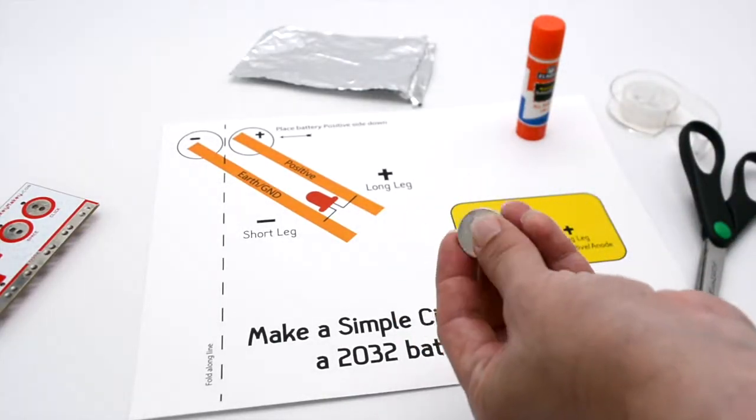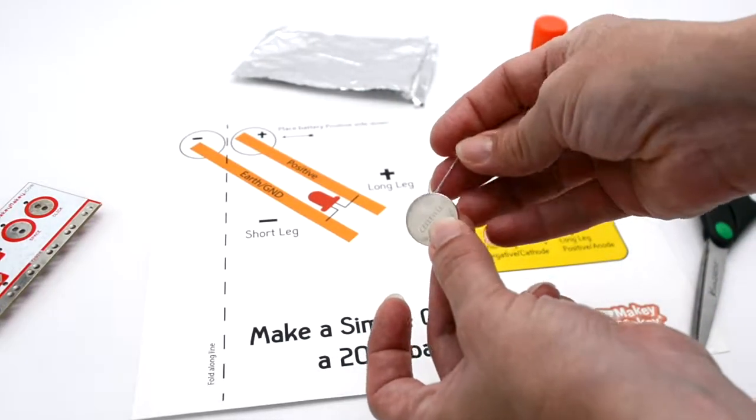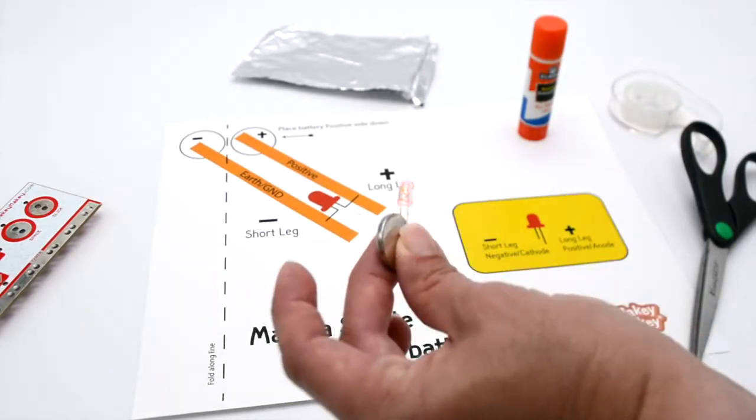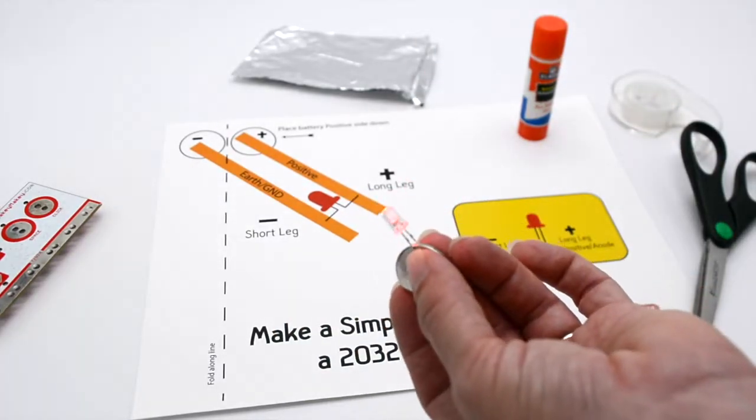The first thing you're going to want to do is test that LED by putting the longer leg over the positive side and the short leg over the negative side to make sure it lights up.